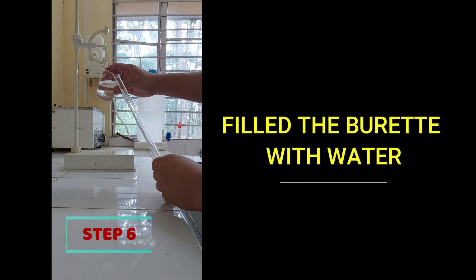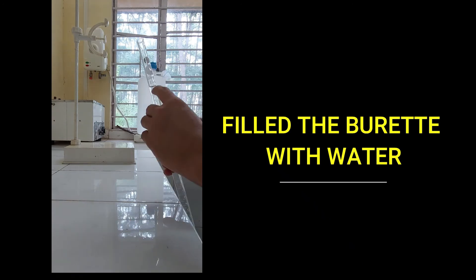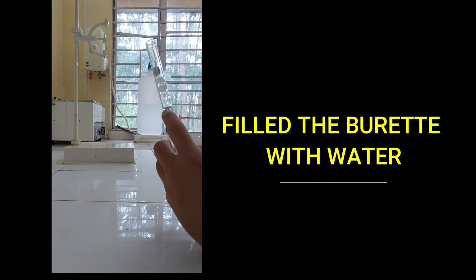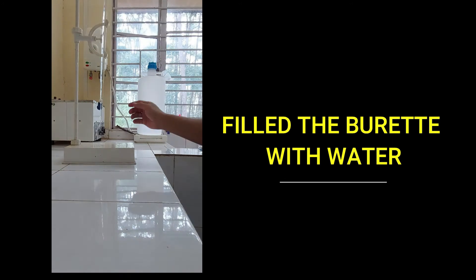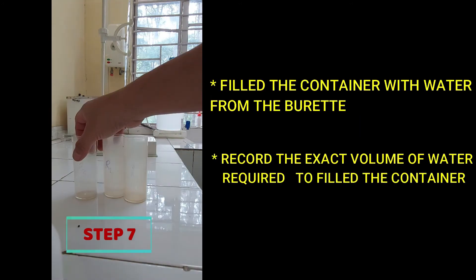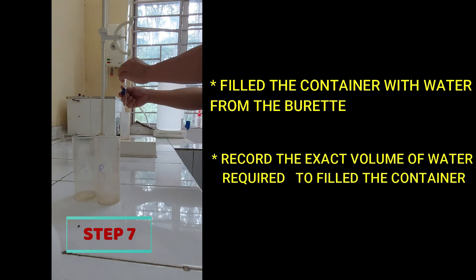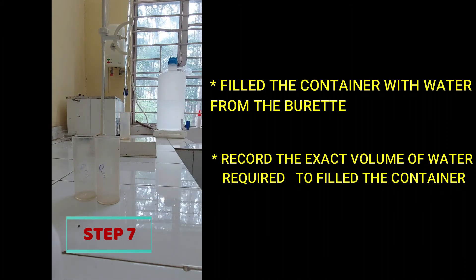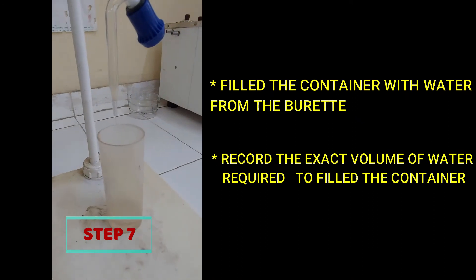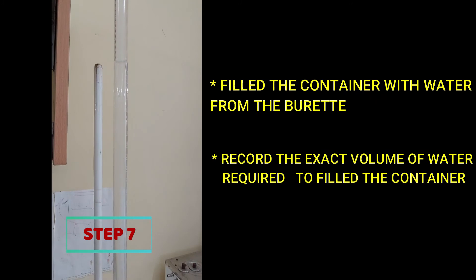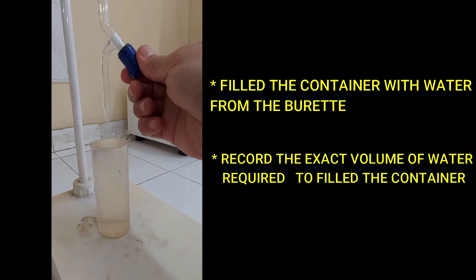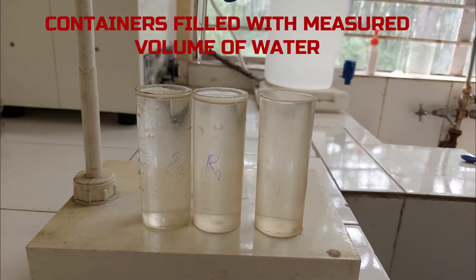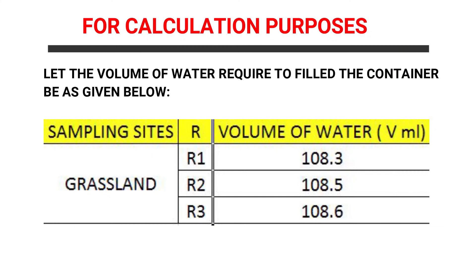Next, fill the burette with tap water and fit the burette into the burette stand. Then fill the container with the water from the burette. We use a burette in order to get the exact volume of water that is required to fill the container. Let the volume of water required to fill the container be as given on the screen.